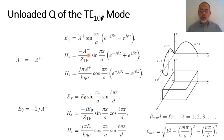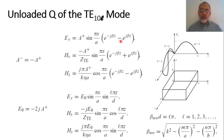The amplitude of the forward propagating wave is A⁺ sin(πx/a) multiplied by e^(−jβz), and the backward propagating wave is A⁻ sin(πx/a) multiplied by e^(+jβz). As we said in the previous video, for a rectangular cavity resonator, the amplitude of the forward propagating wave for the electric field equals the negative of the backward propagating wave.